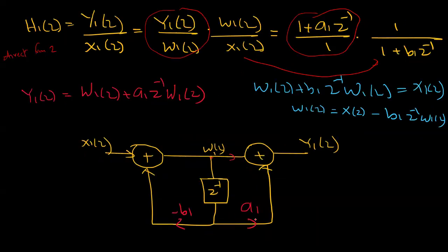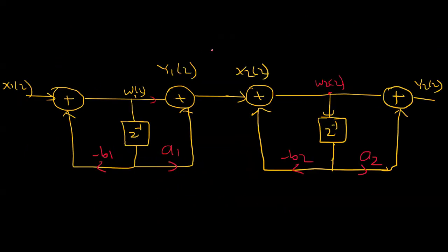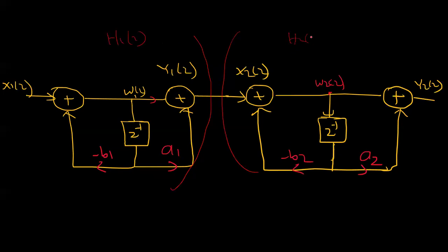The denominator coefficient is minus b. If you learn Direct Form 2, you can apply it directly. With each specific element in this form, you then pass to the cascade form of realization. Any realization can be expressed in cascade form.